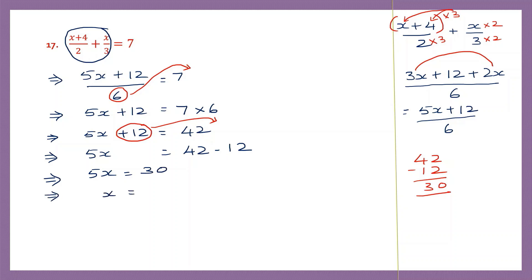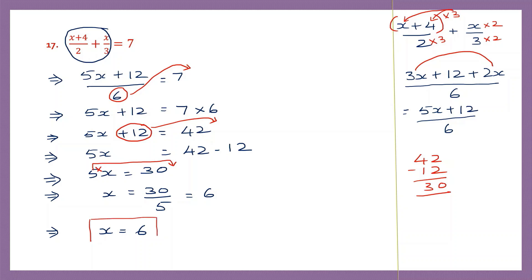So what is the value of x? x will be 30 divided by 5, because we transpose the 5 from multiplication on the left to division on the right. 5 sixes are 30, so x is equal to 6. That is our answer.